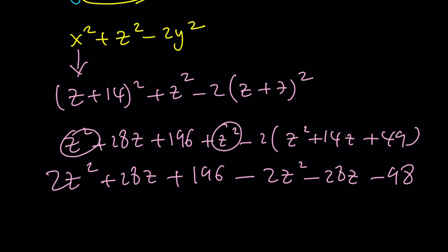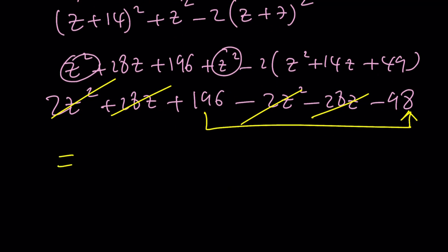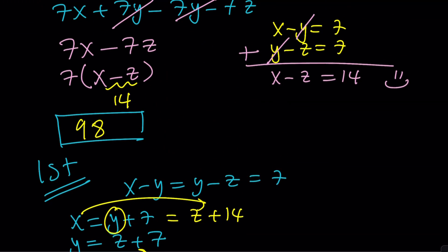Now, 2z squared cancels out, 28z also cancels out. We end up with 196 minus 98, which is actually 98, because 196 is 2 times 98. So we get 98 again, which should not be a surprise because we're solving the same problem.